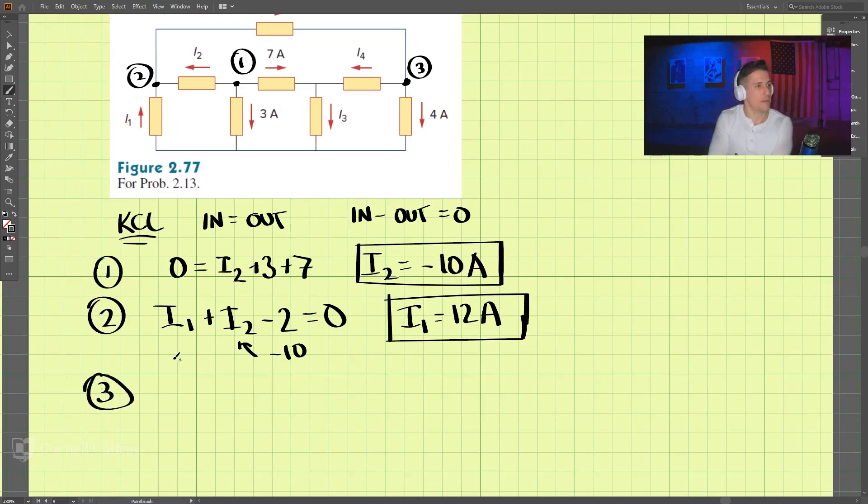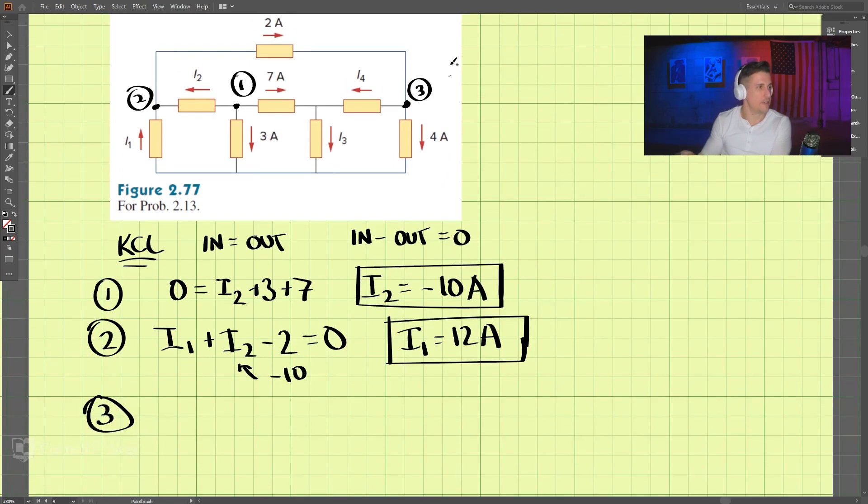So at 3, we have in is 2, and out is negative 4, 4, minus I4, I4. So, I4 equals 0.